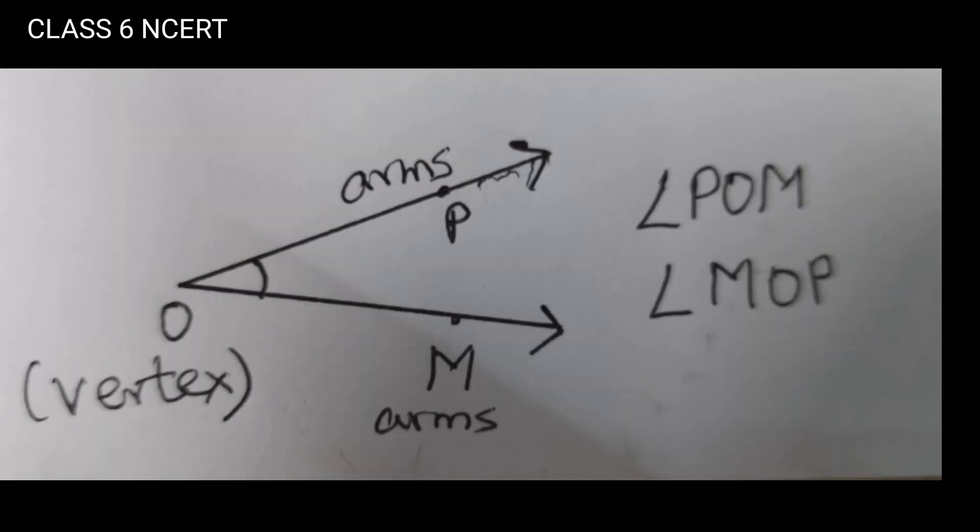An angle can be visualized as two rays starting from a common starting point. Two rays OP and OM form the angle, angle POM also called angle MOP. Here O is called the vertex of the angle and the rays OP and OM are called the arms of the angle.